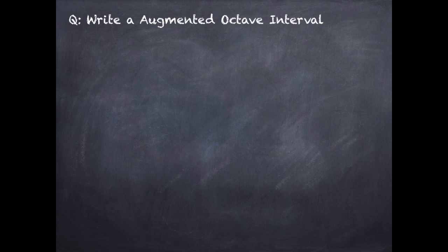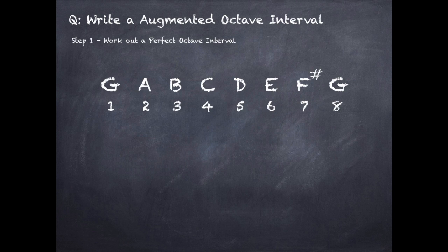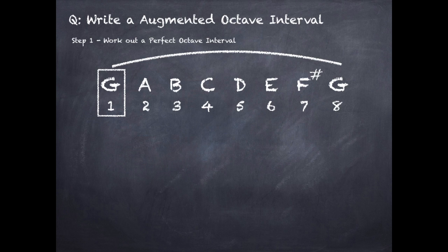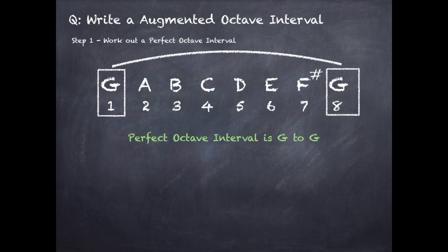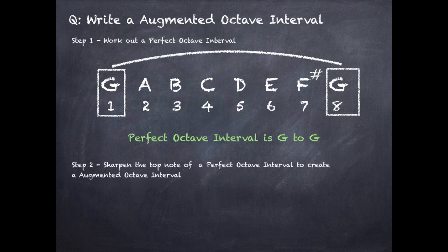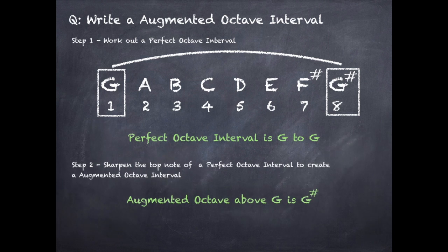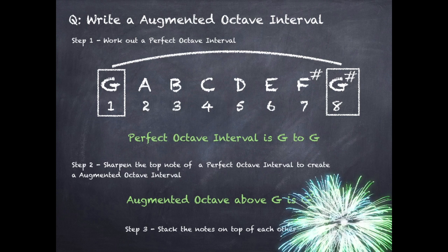To write an augmented octave, first work out a perfect octave. We go from the first note of the G major scale, which is G, to the eighth note, which is G. So a perfect octave is G to G. To make this an augmented octave, sharpen the top note of the perfect octave, so the top G becomes G sharp. Our augmented octave is G to G sharp. Finally, stack the notes on top of each other on the stave.